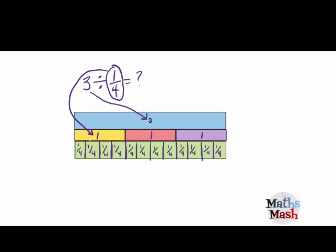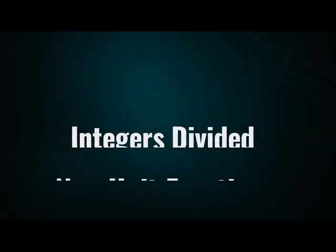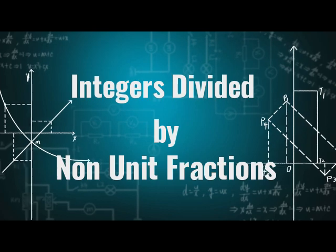So now we just count up how many quarters we've got. We've got 5, 6, 7, 8, 9, 10, 11, 12. So that means that 3 divided by 1 quarter is 12. That means there's 12 one-quarters in 3.